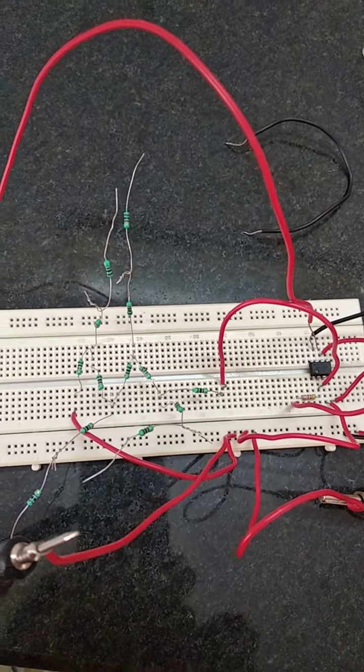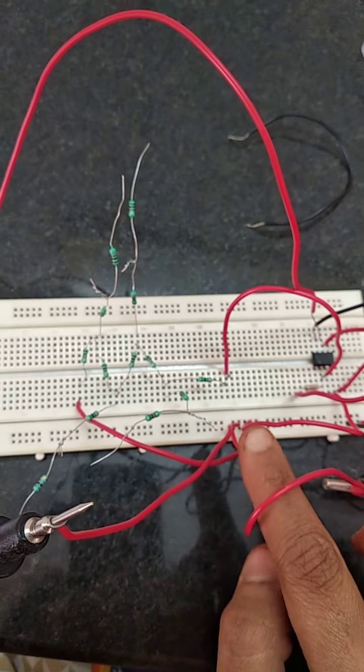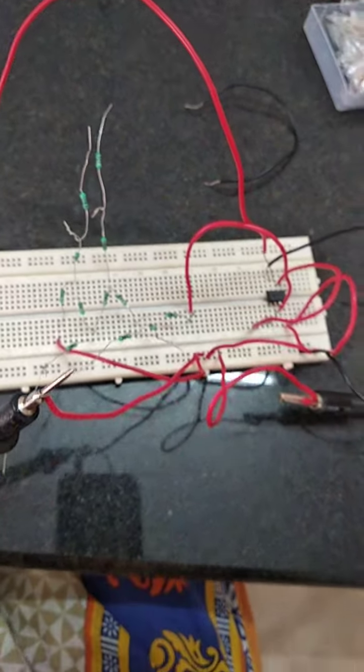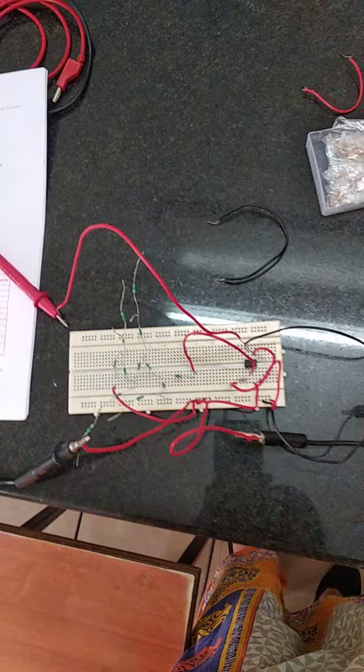This is the circuit diagram for this experiment. When we want to apply logic 1 we will connect that point to the VCC point. When we want to apply 0 we will connect that particular point to the ground.